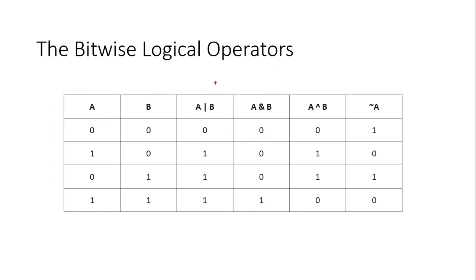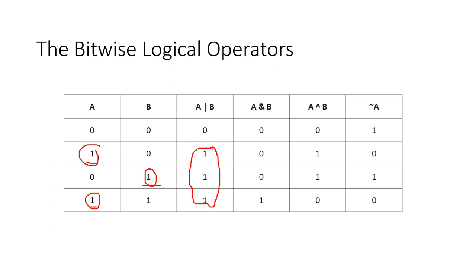For the OR operator: OR gives 1 if at least one of the operands is 1. If one of them is 1, the OR result is 1. Only when both operands are 0 does OR give 0. OR is different from AND in that it only needs one operand to be 1.